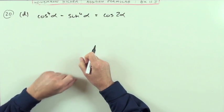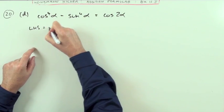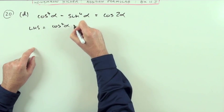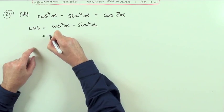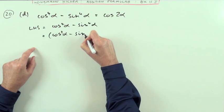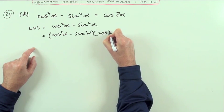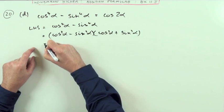So, for D, I reckon I did that straight away as a difference of two squares. So, left-hand side, I've got cos to the power of 4 alpha, minus sin to the power of 4 alpha. So, that'll be cos squared alpha, minus sin squared alpha, times cos squared alpha, plus sin squared alpha.